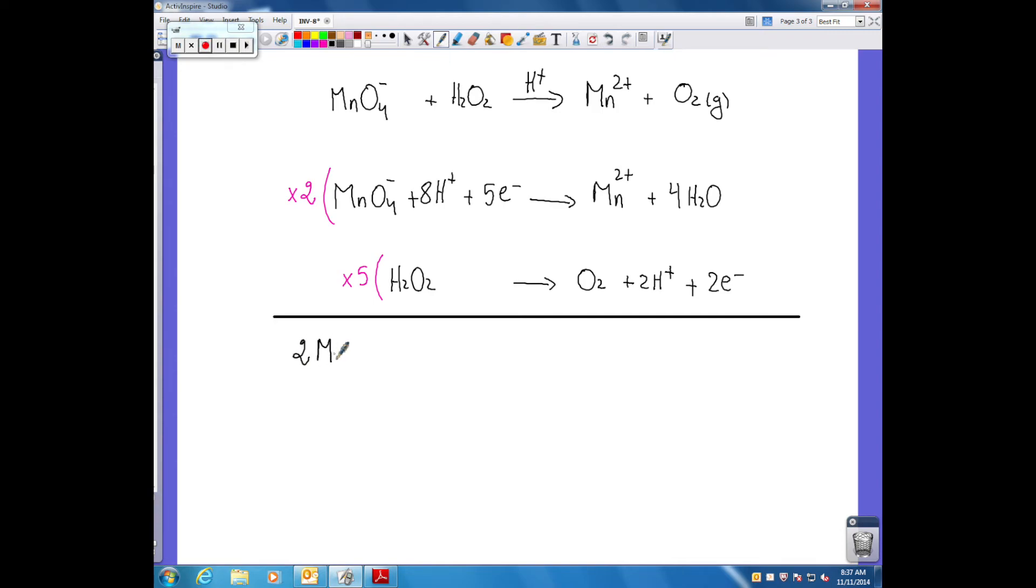The result will be 2MnO4- plus 5H2O2 plus 6H+ will give us 2Mn2+ plus 5O2 plus 8H2O.